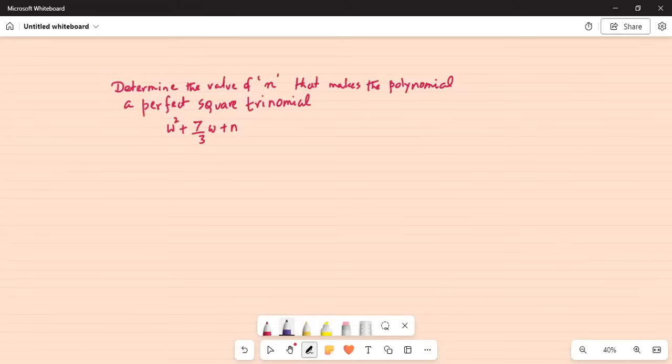Determine the value of n that makes the polynomial a perfect square trinomial. So, how do you make it a perfect square? n has to be square of something that is missing. So, the formula is to do like this. n is basically, we have w² plus 7/3w plus n.